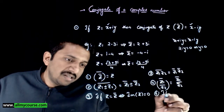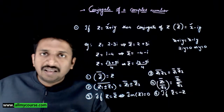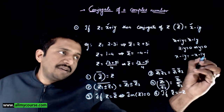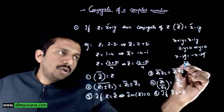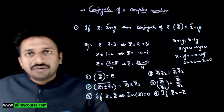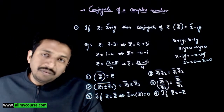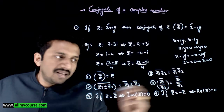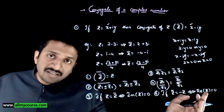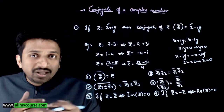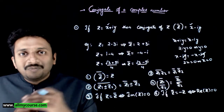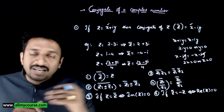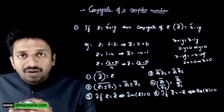Conversely, if z bar equals minus z — that is, x minus iy equals minus of x plus iy (which is minus x minus iy) — then the iy terms cancel and 2x equals 0, implying x equals 0. So the real part of z equals 0. This works both ways: if the real part of z is zero (the number is purely imaginary), then z bar equals minus z.